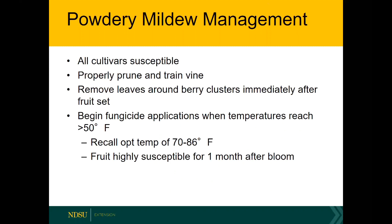If you decide to apply fungicides, do so when temperatures are above 50 degrees Fahrenheit. Even though the optimal temperature is 70 to 86 degrees, the fungus does have some activity at 50 degrees or warmer. The fruit is highly susceptible for one month after bloom, after which it becomes less susceptible as it matures. Even if the fruit isn't directly infected, the nutrients being sapped from the leaves could stress the plant and reduce the quality of the fruit.